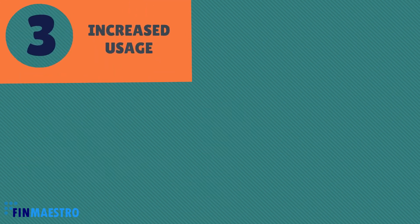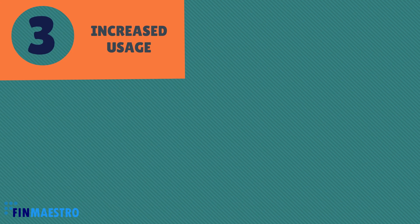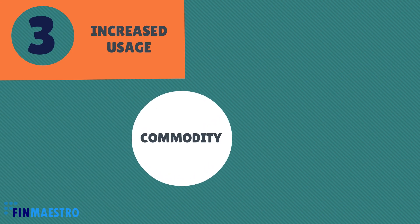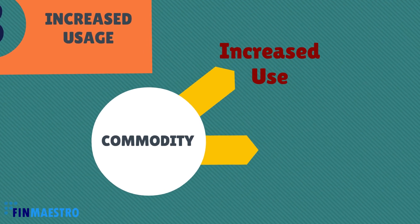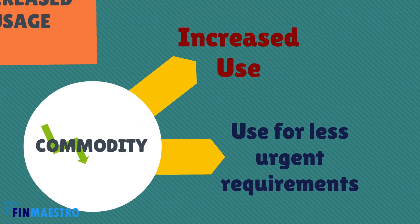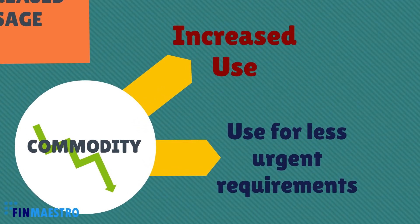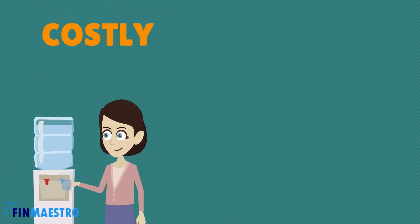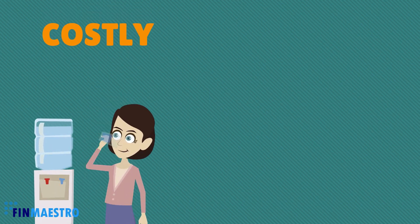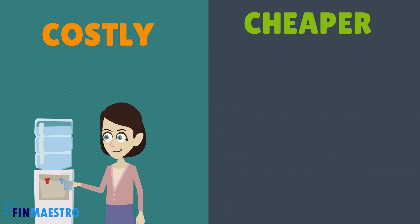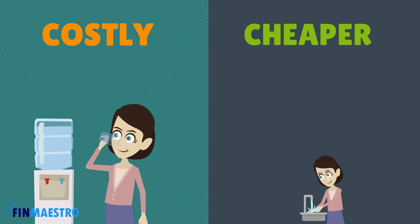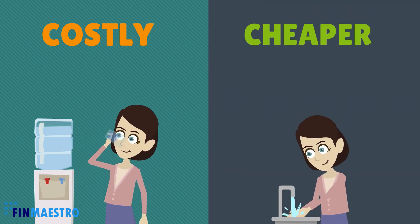3. Increased usage. Commodities tend to be put to more uses or less urgent uses when they become cheaper. For example, if water is dear, we will use it only for drinking. When cheaper, it could be used even for other purposes like washing or less urgent purposes.